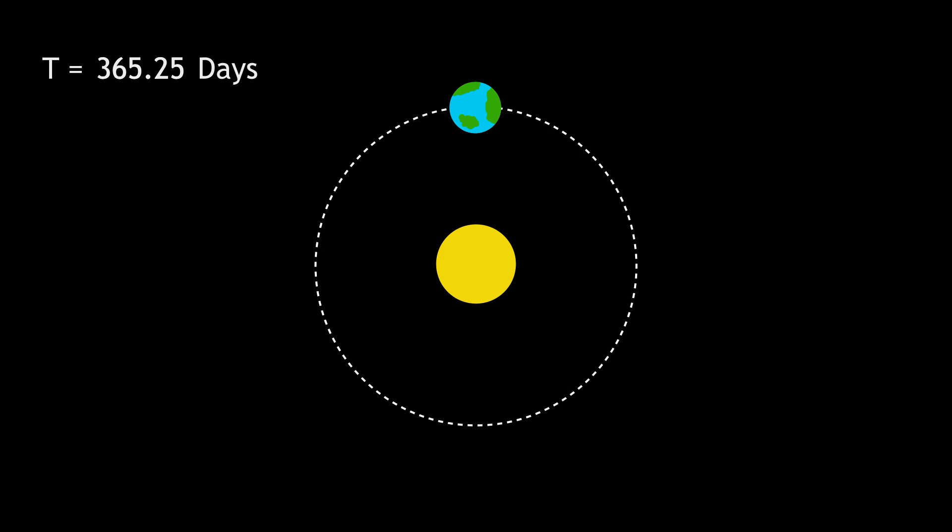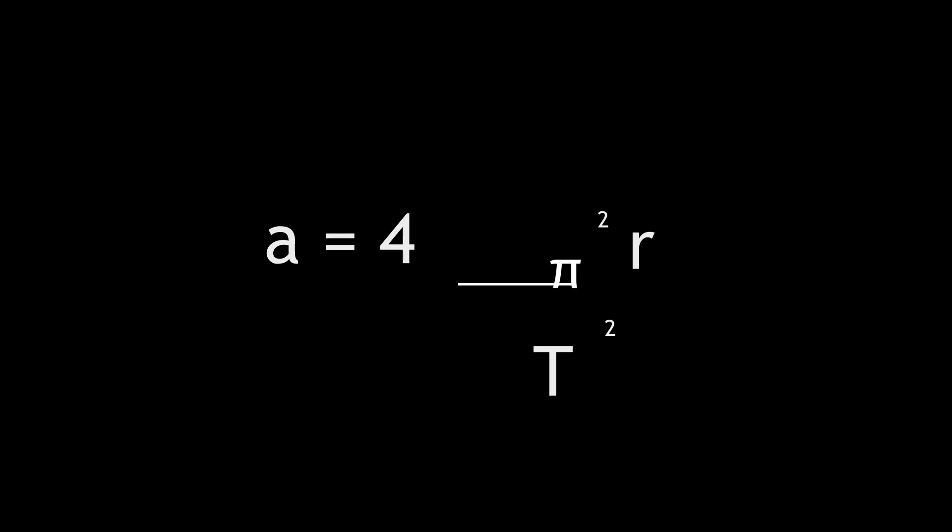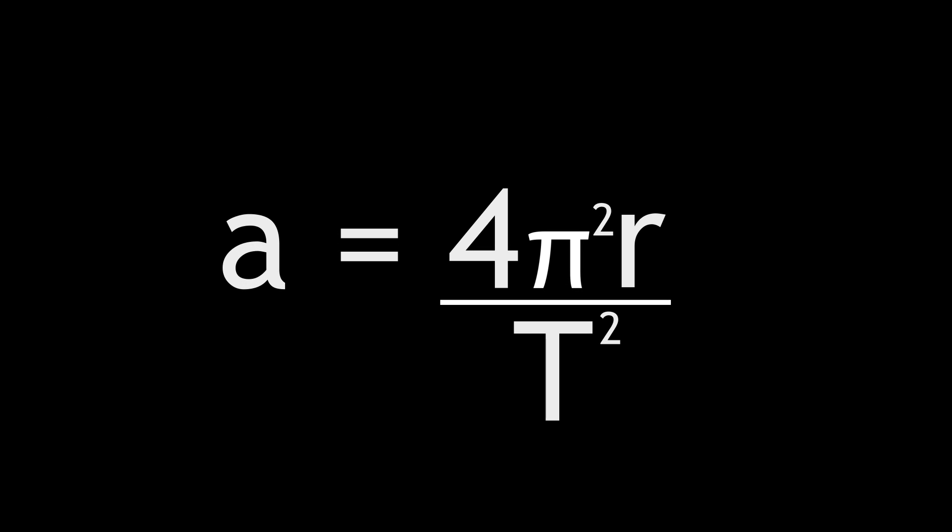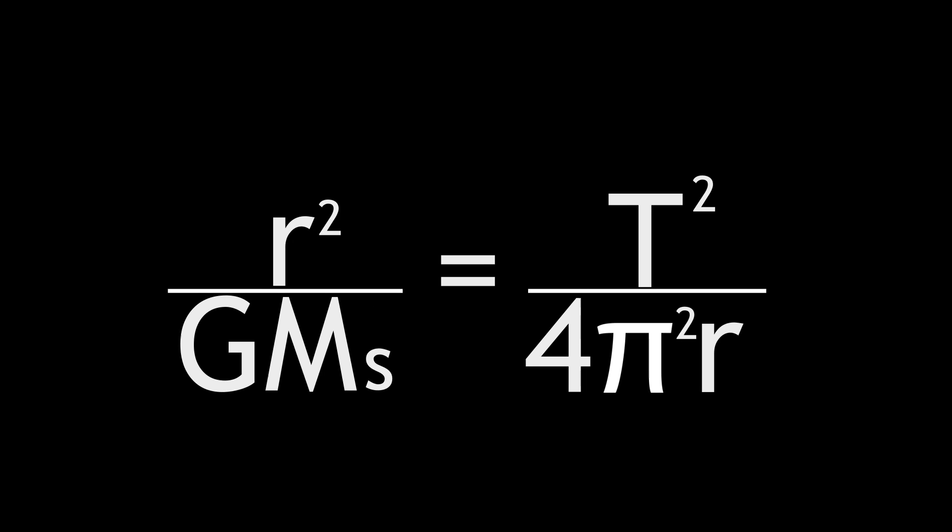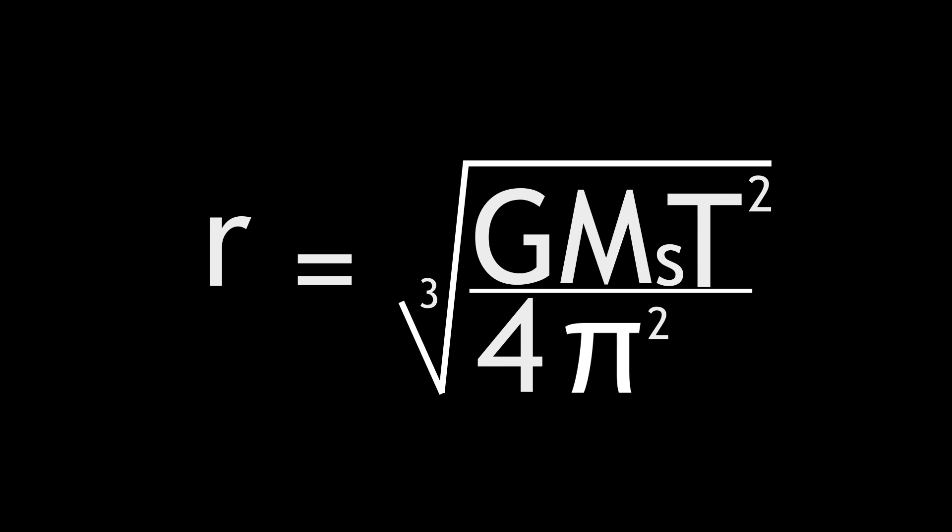General analysis can be done for a body performing uniform circular motion, for time period t, to show that the centripetal acceleration is 4 pi squared r over t squared. Rearranging for the radius, we can see that assuming we know the mass of the Sun and Newton's gravitational constant, the radius of the orbit is uniquely determined by its time period.